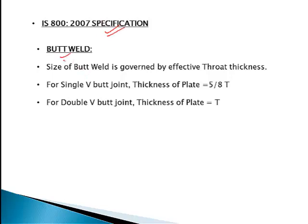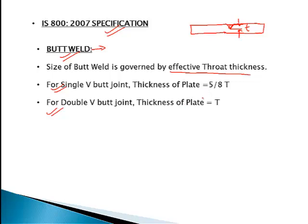As per IS 800 specification, butt weld design depends on the effective throat thickness. The effective throat thickness is denoted by 't'. For a single V butt joint, it is taken as 5/8 of T, where T is the thickness of the plate — because full penetration is not achieved. As per IS code, t is taken as 5/8 of T. But in case of double V butt weld, the effective throat thickness is taken as D, i.e., simply the full thickness of the plate.